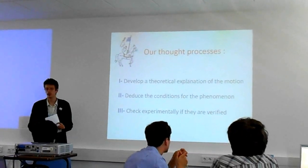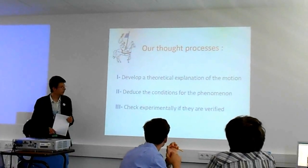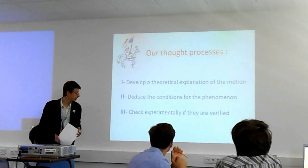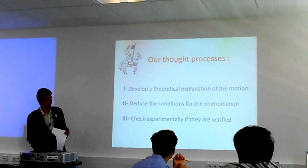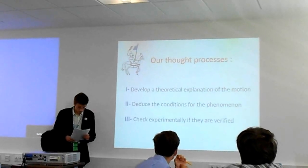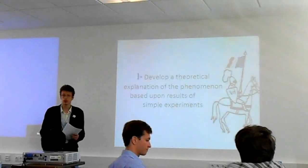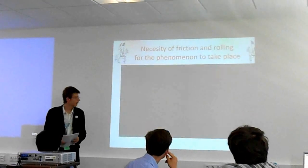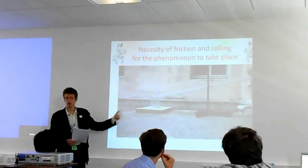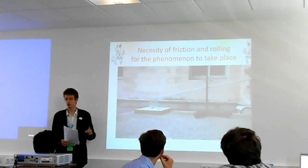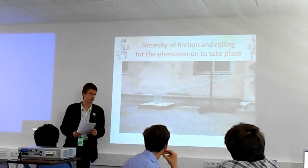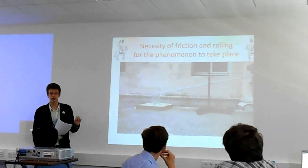First of all, we're going to develop a theoretical explanation of the motion. Then we're going to deduce from the theoretical explanation the conditions for the phenomenon to happen. Finally, we will check experimentally if they are verified, if these are really the right conditions. Let's start with the theoretical explanation. This is with oil inside the hole and we see that the ball directly falls down. This shows that the friction between the ball and the hole is really a crucial parameter. If this does not happen, the ball does not come out.